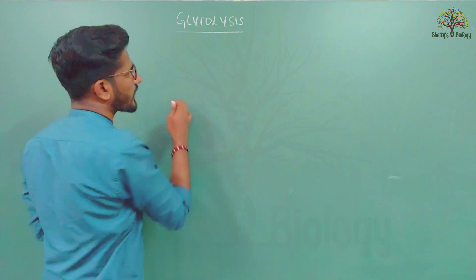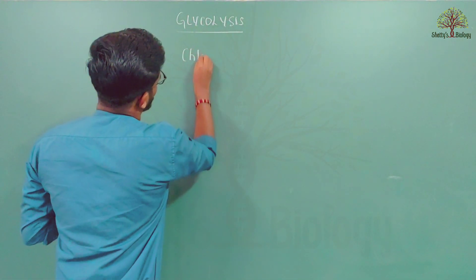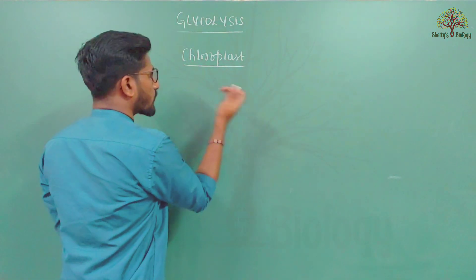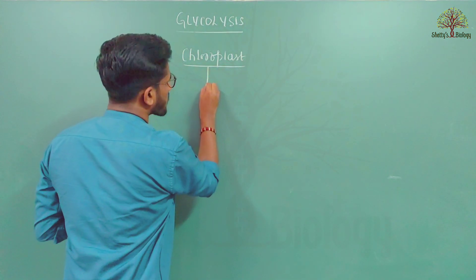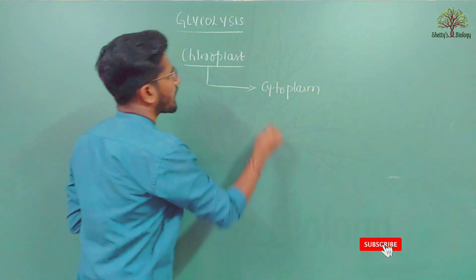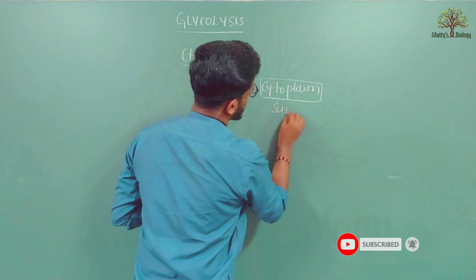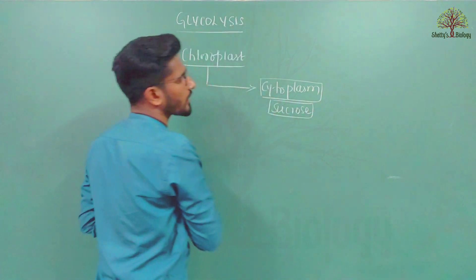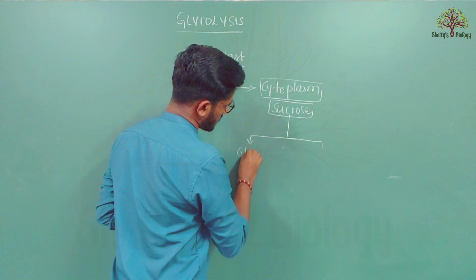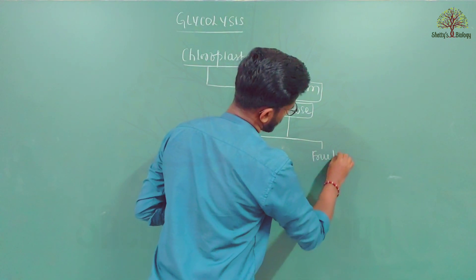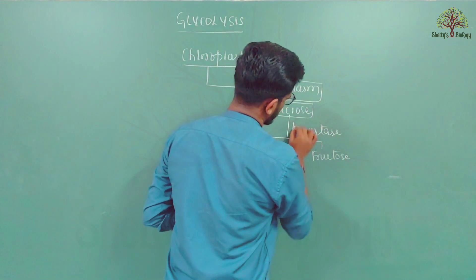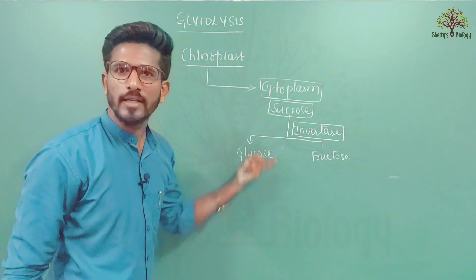Photosynthesis leads to the formation of starch in the chloroplast. Starch is stored in the form of sucrose inside the chloroplast, and from the chloroplast sucrose is migrated towards the cytoplasm. This sucrose is then converted into two different molecules — glucose and fructose — by the activity of the enzyme called invertase. So glucose is now formed in the cytoplasm.